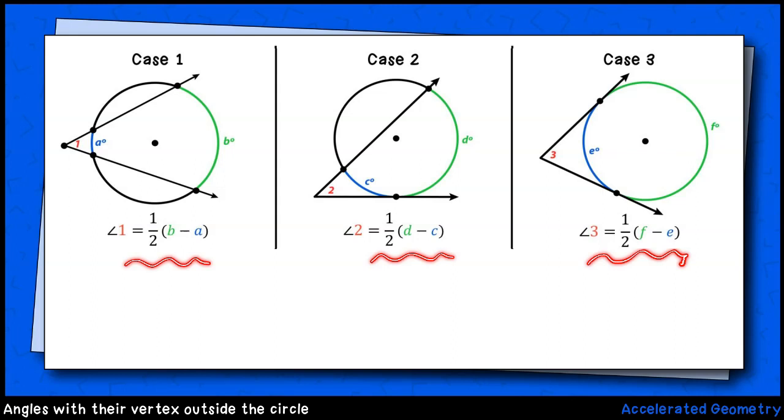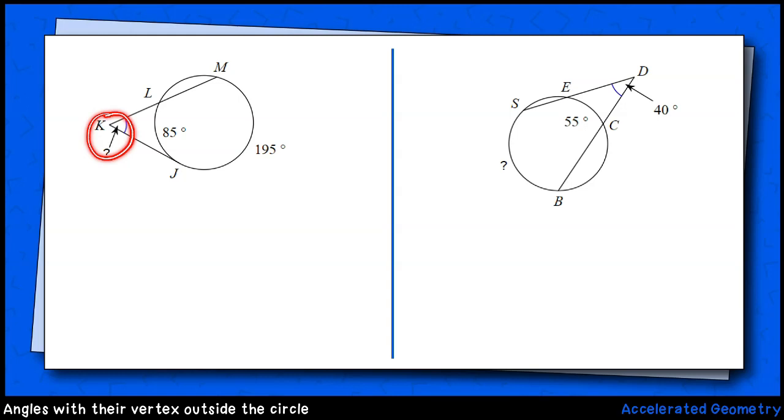Let's do a few examples together, starting with the left. I'm asked to find the measure of angle K. Well, that will be one-half times 195 minus 85, or 55 degrees.